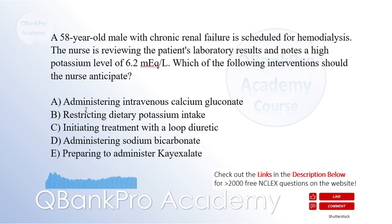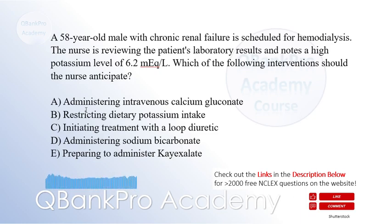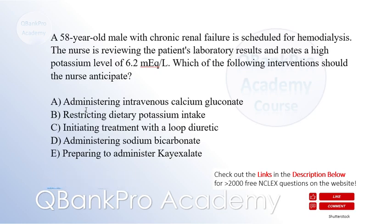A 58-year-old male with chronic renal failure is scheduled for hemodialysis. The nurse is reviewing the patient's laboratory results and notes a high potassium level of 6.2 milliequivalents per liter. Which of the following interventions should the nurse anticipate? A. Administering intravenous calcium gluconate. B. Restricting dietary potassium intake. C. Initiating treatment with a loop diuretic.